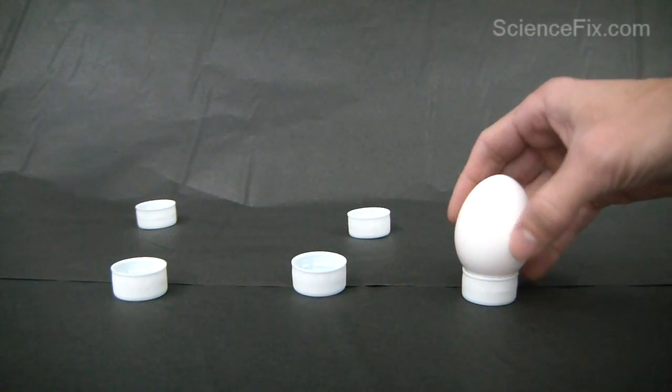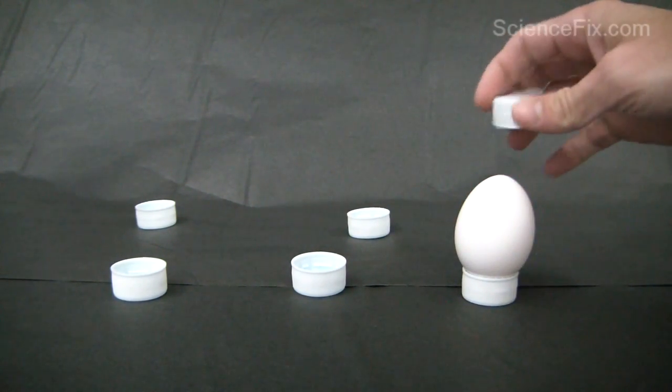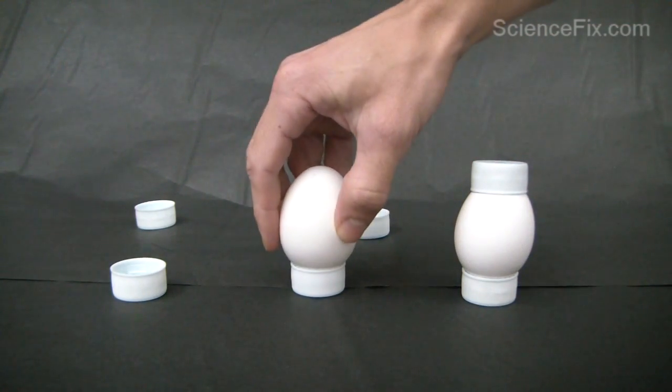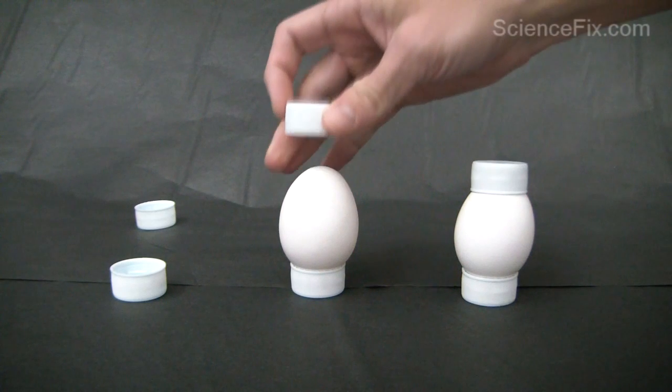Here we have six bottle caps, and in three of the bottle caps we're going to place an egg. What the bottle caps do is they provide a nice flat surface for the bottom of the egg and the top of each egg.